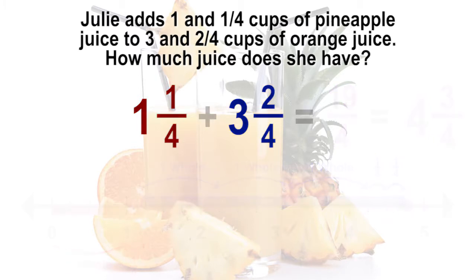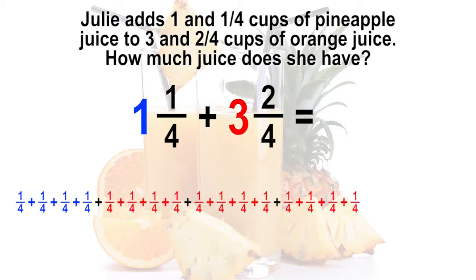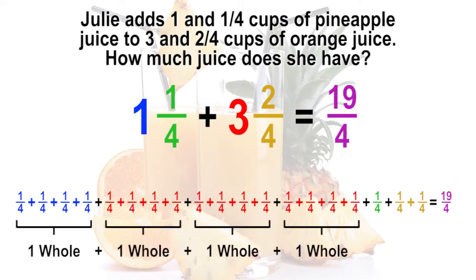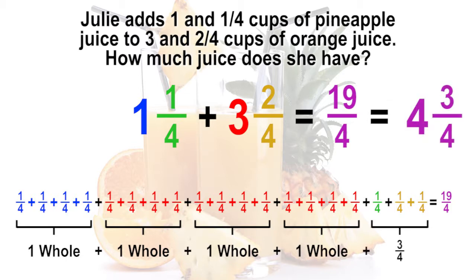Another strategy would be to decompose the mixed numbers into unit fractions before adding. We can decompose the whole numbers into four one-fourths. So the one cup of pineapple juice is one-fourth written four times, and the three cups of orange juice is one-fourth written twelve times. Then add the remaining one-fourth cup of pineapple juice. Decompose the remaining two-fourths of the orange juice into two one-fourths. The sum of both juices is nineteen-fourths cups. We can see that if we combine each four-fourths together to make a whole, we have four whole cups with a fractional part of three-fourths cups, which is written as four and three-fourths cups of juice.